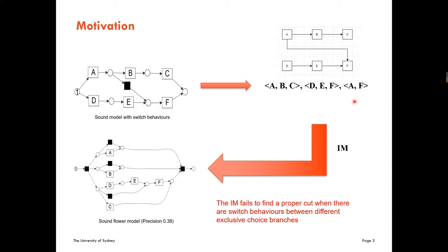However, if we bring this event log directly into the Inductive Miner, because of the directly-follows relation from activity A to activity F, we will no longer be able to find a proper cut, and the fall-through will return. As a result, we get a flower model, which is sound but with very low precision. Inductive miners are very good for discovering sound process models, but they can return flower models when behaviors are complex.